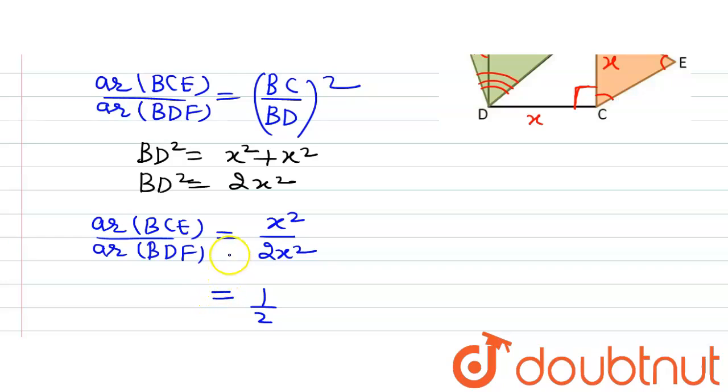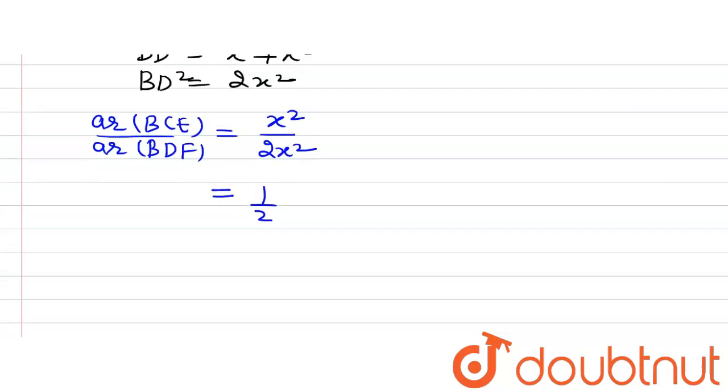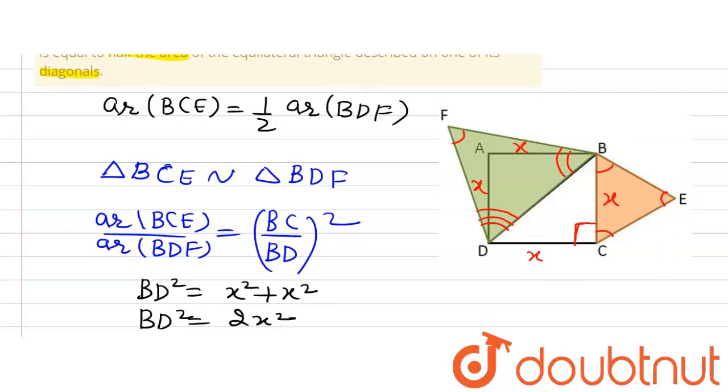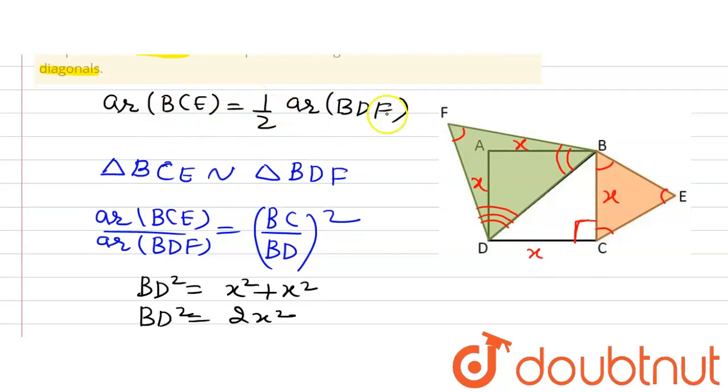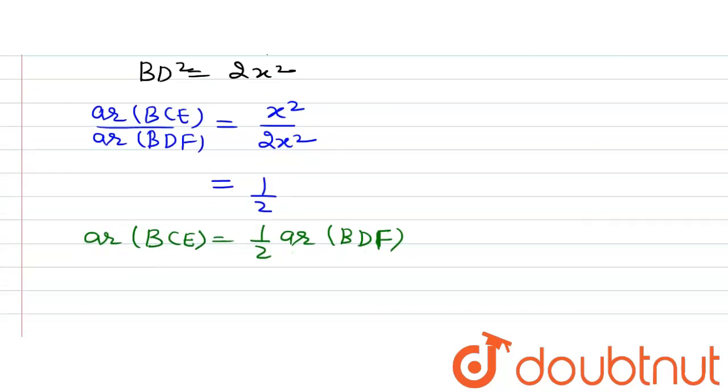So now this BDF when it will go to the right hand side of the equation, we will get area BCE is equal to half of area BDF. Now in the question this is what we were required to prove, that area BCE is equal to half of area BDF. And hence proved, thank you.